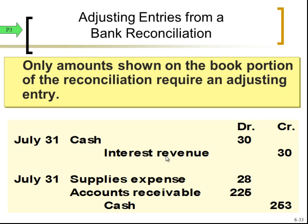For the interest revenue, cash was added to our account, so we debit cash for $30 and credit interest revenue for $30. For the recording error — we wrote the check for $268 but recorded it as $240 — we need to record the additional $28. That entry is a credit to cash for $28, with the debit going to whatever expense account the check related to.